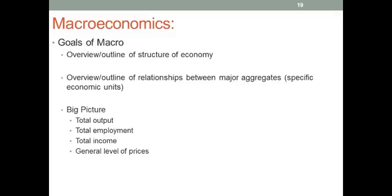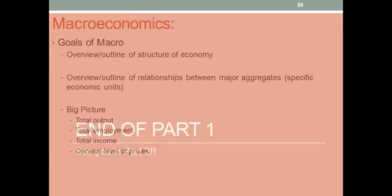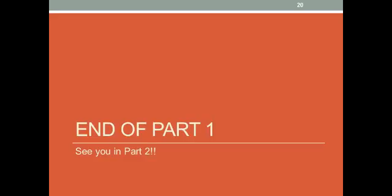Macroeconomics, again, is an overview and outline of the structure of the economy. It looks at relationships between major aggregates — big picture: total output, total employment, total income, and a general level of prices — as opposed to the output of a specific business, employment of a specific person or small industry, individual income, and a specific price for a specific good. And that's the end of part one. I hope you all learned what you needed to. Come to class prepared with questions. Thank you.